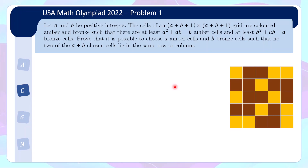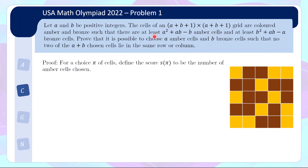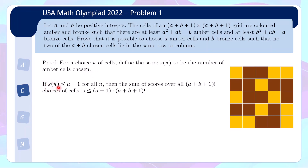The intuition is: if every choice of cells has at most A−1 amber cells, there would be too few amber cells total, contradicting the minimum condition. To formalize this, define a score S(π) for each choice of cells as the number of amber cells chosen. If all choices score at most A−1, then since there are (A+B+1)! total choices, the sum of all scores is bounded above by (A−1)·(A+B+1)!.